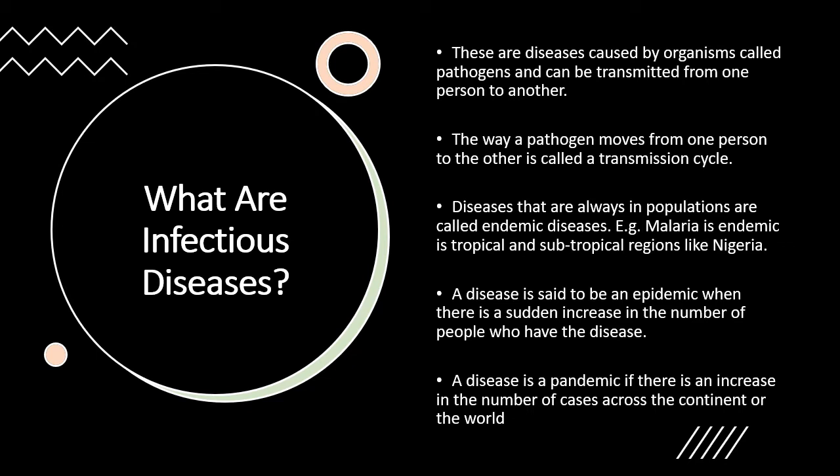When you call a disease an epidemic, that is when there's a sudden increase in the number of people who have the disease. For example, when Ebola broke out in the DRC and spread across parts of Central and West Africa, that was an epidemic — which thankfully was contained in time. You can also call a disease a pandemic. If you lived through the coronavirus pandemic, you already know it means the disease has spread across the world or a whole continent.